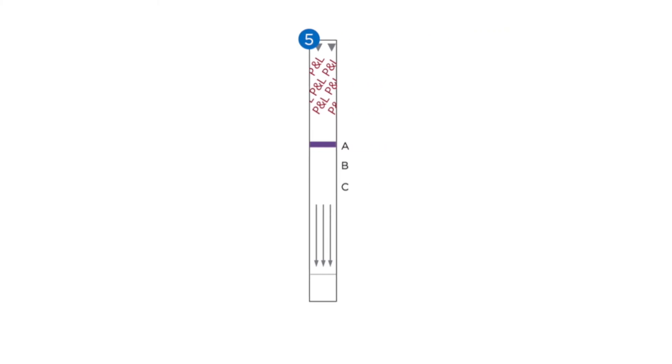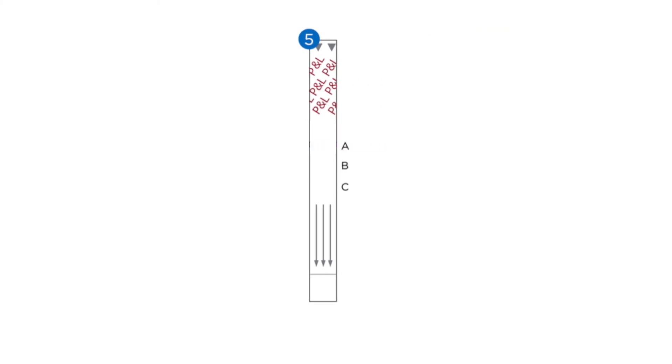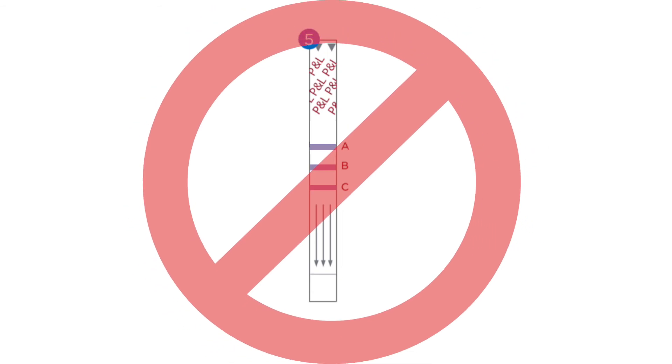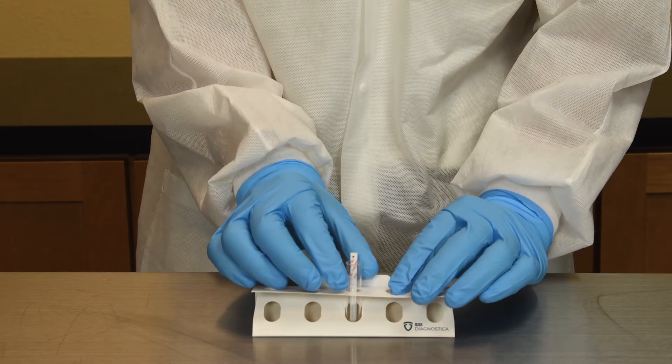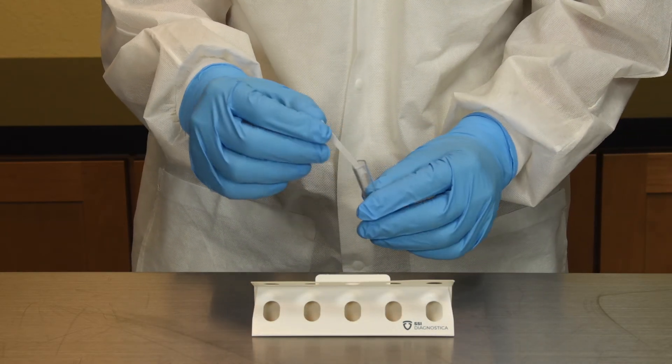Please note that if the control line does not appear, if the test lines are not the correct color, if the test lines appear as partial lines, or if the test lines show three identical gray or purple lines, the test is deemed invalid. If an invalid test is observed, follow the procedure for invalid tests found in the instructions for use. If an invalid test is observed, retest for accurate results.